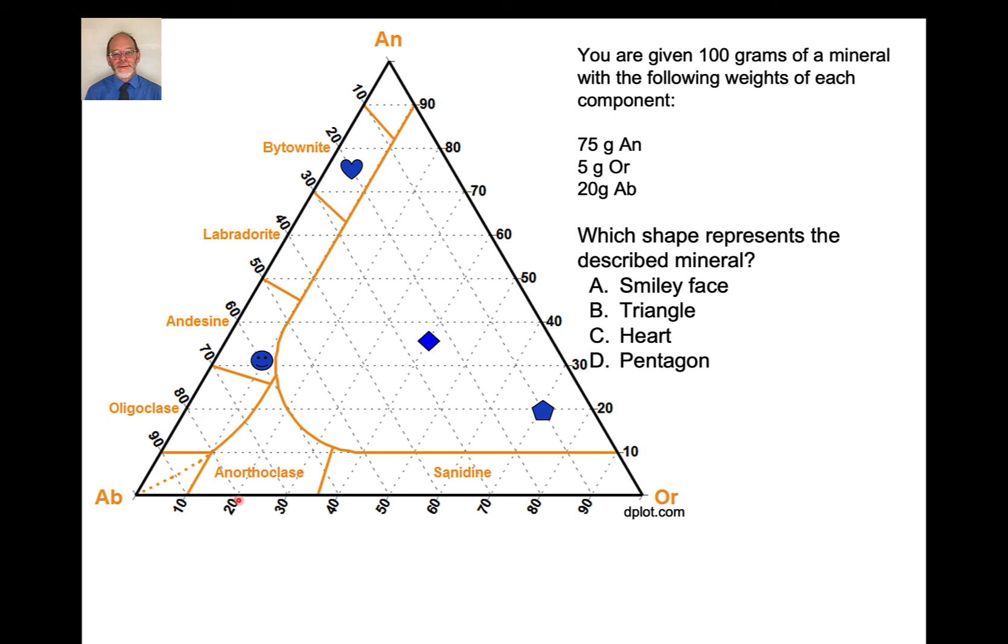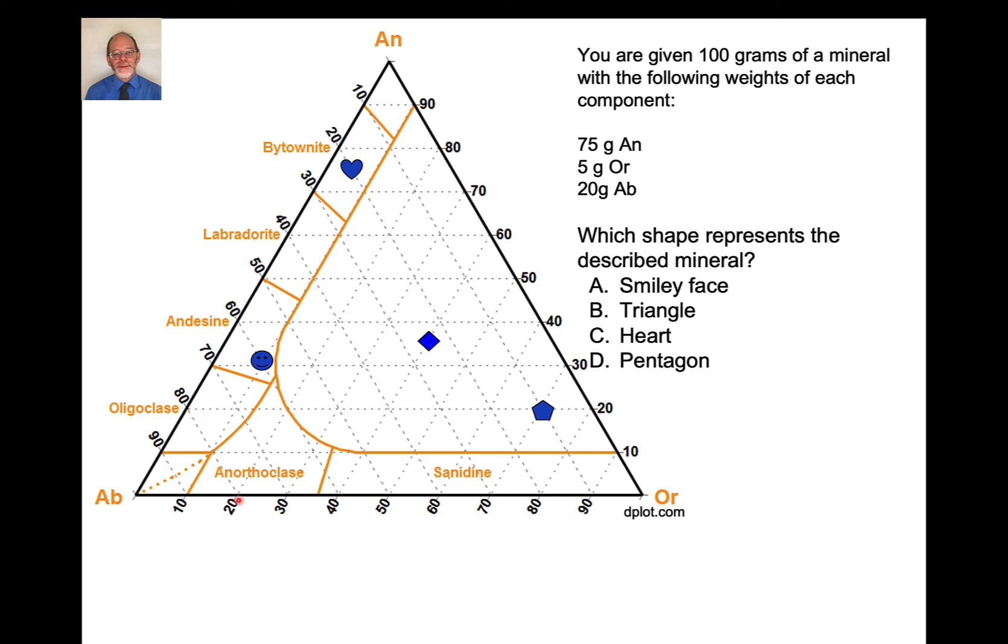So here's one. Now this is by weight. Suppose you're given 100 grams of a mineral that is 75 grams of anorthite, 5 grams of orthoclase, and 20 grams of albite. Which shape would represent the mineral? And the answer here is the heart. Again, I look at what component is the most abundant? Anorthite. So 90, 80, 70, 75. Because this is mostly anorthite, I have to be in the upper half of this triangle. So even if you knew nothing else but that it had more anorthite than anything else, you could guess that this is likely the correct plotting position. Of course, you'd want to make sure 5% orthoclase, 20% albite to ensure it is the correct plotting position. But given these four choices, this is the one that makes the logical sense.